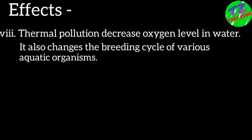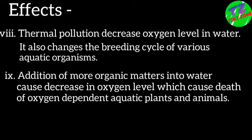Chemically polluted water, when applied in crop fields, also affects crop yield. Thermal pollution decreases oxygen levels in water and changes the breeding cycle of various aquatic organisms. Addition of more organic matter into water causes a decrease in oxygen level, leading to the death of oxygen-dependent aquatic plants and animals.